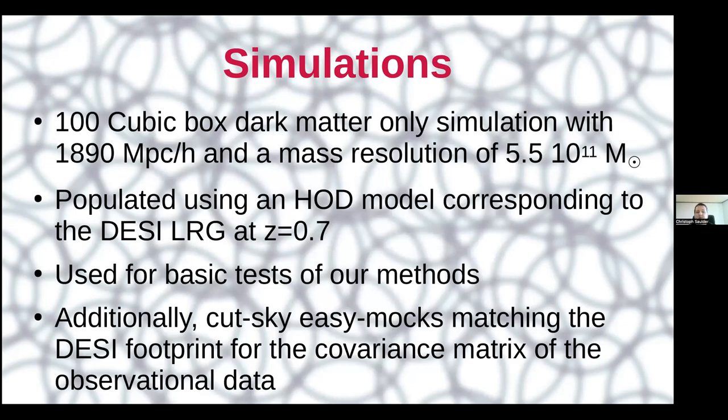So as I was talking about simulations, we also have 100 cubic dark matter only simulations with almost 2 gigaparsec side lengths and a mass resolution of about 5 times 10 to the power of 11 solar masses. We are populating those with HOD models corresponding to the DESI LRG sample at redshift around 0.7. We use those for basic tests of our methods to have a baseline to compare the observational data we will use later. Additionally, we have cut sky mocks matching DESI footprints to get the covariance matrix for the observational data.